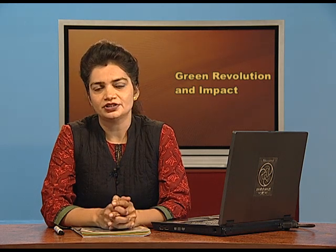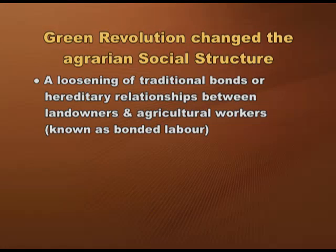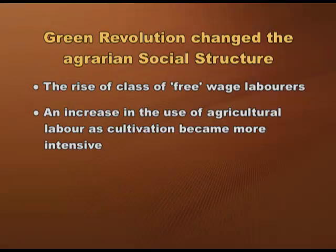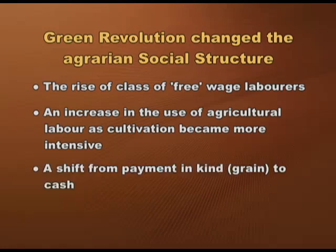Apart from increasing per hectare productivity, the green revolution also led to transformation in the agrarian social structure. Some important changes include: a loosening of traditional bonds or hereditary relationships between landowners and agricultural workers, known as bonded labour or the Jajmani system; the rise of a class of free wage labourers who migrate from one area to another at harvest time; an increase in the use of agricultural labour as cultivation became more intense; and finally, a shift from payment in kind, that is in grain, to cash payment. The Jajmani system has been replaced by wage relations between landlords and agricultural workers.